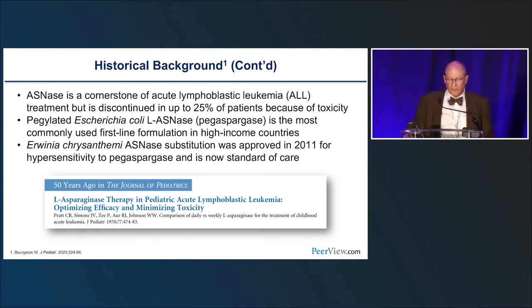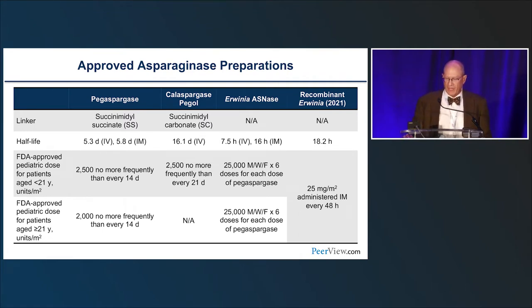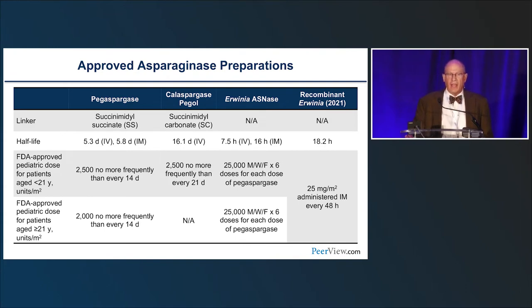All of this was recently summarized in a paper about asparaginase over the last 50 years. There are new types of asparaginase we're working with — pegaspargase and other asparaginase products across the top of the slide, including Erwinia, and now a recombinant Erwinia. Recombinant Erwinia was approved in 2021 to be given as 25 milligrams per meter squared IM every 48 hours — the latest one to join the team.